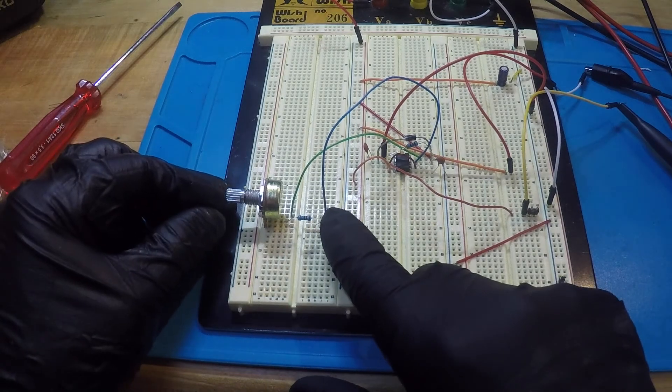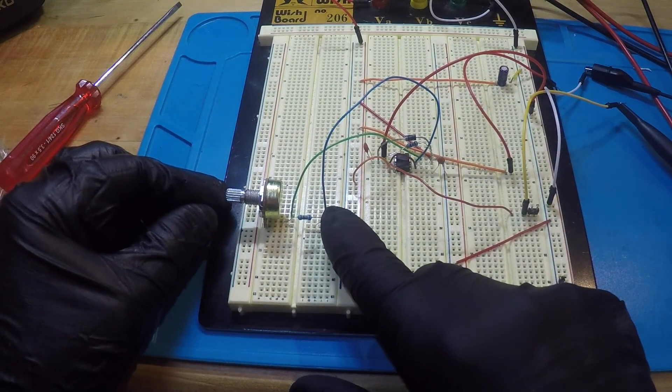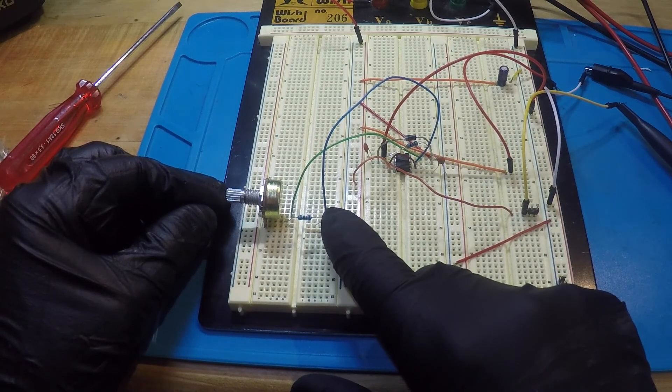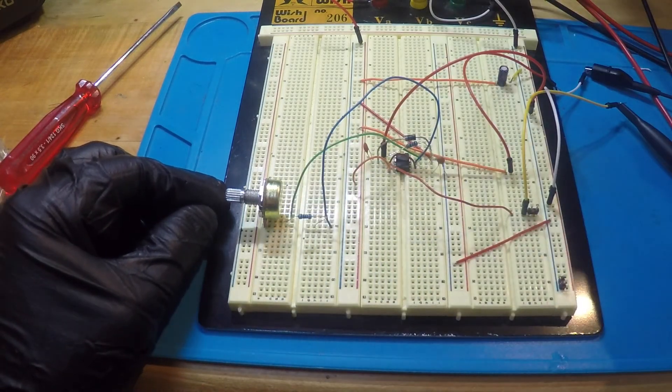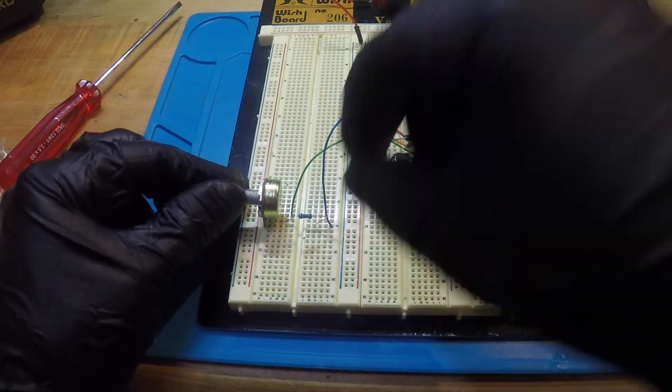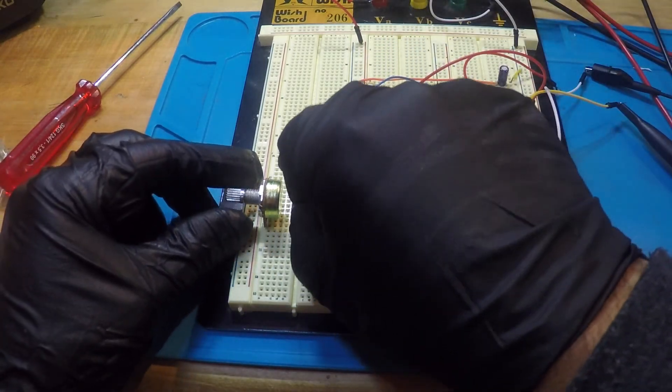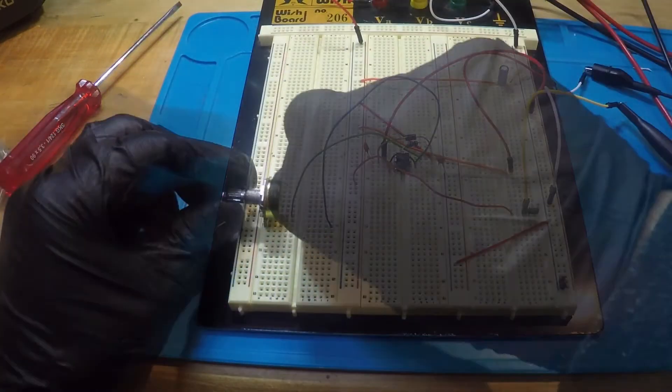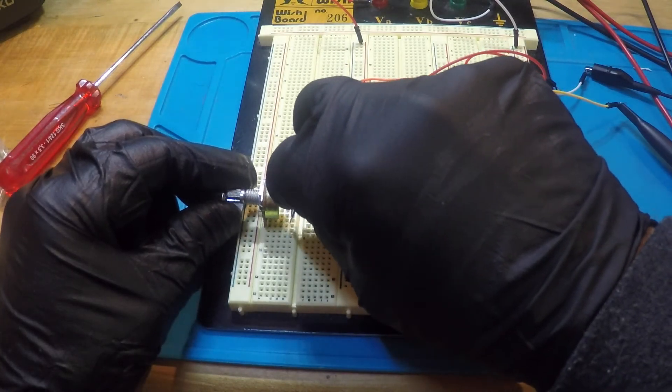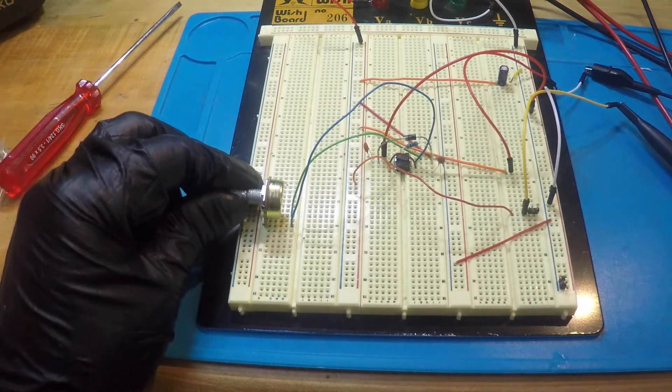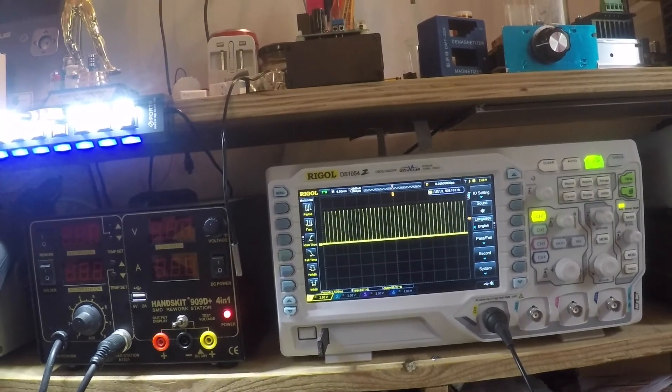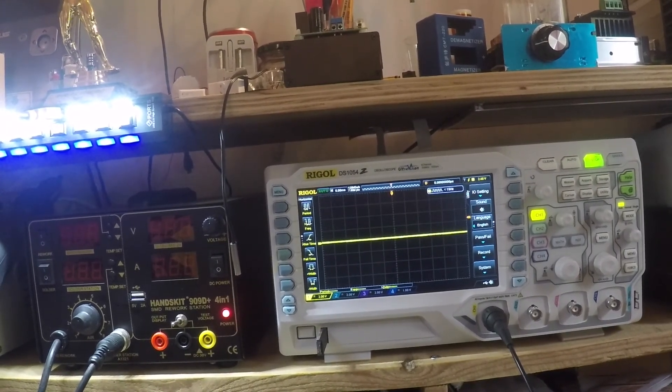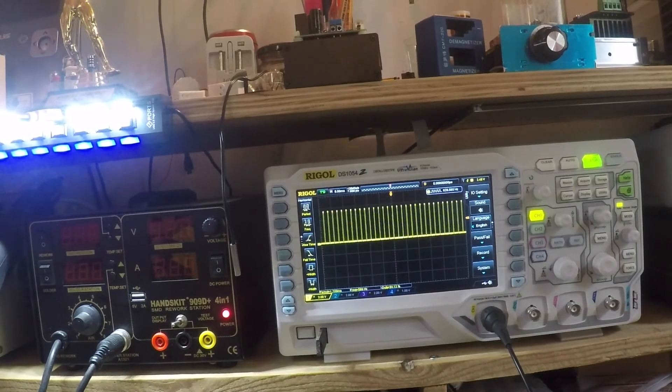You guys also might ask why you need a resistor in series with the pot. So let's take this resistor off and let's see what happens with our signal. Now we have a lower value for R1. But also, when the pot is completely off, we have no value for R1. That means we have no pulse.